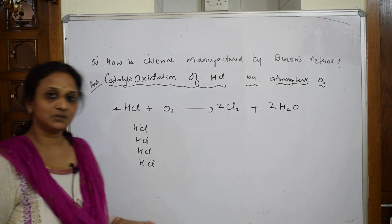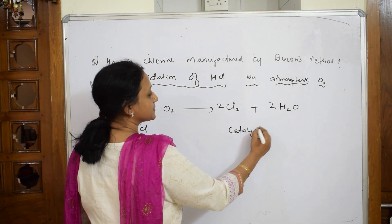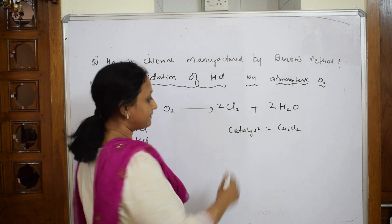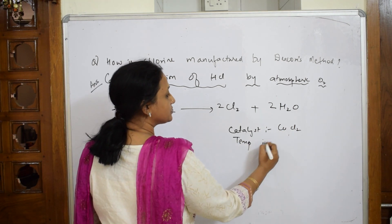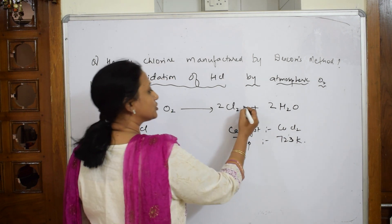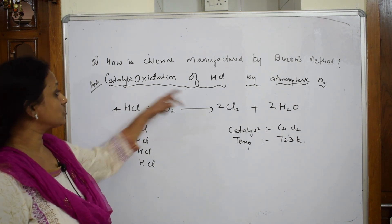Simple logic. Now I said catalytic oxidation—here the catalyst which is used is copper chloride, CuCl2, and the temperature which we are going to use is 723 Kelvin.